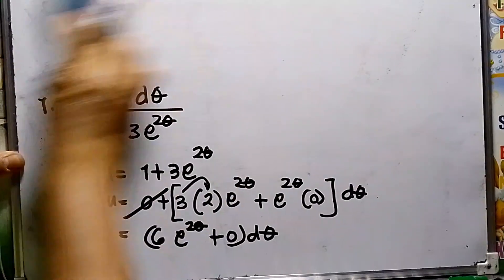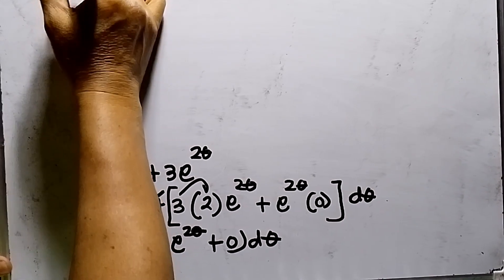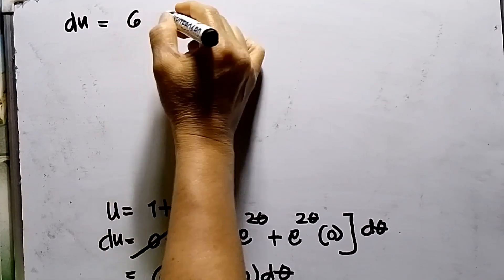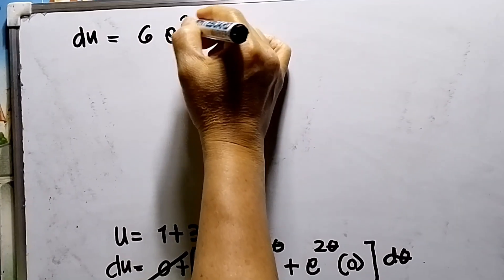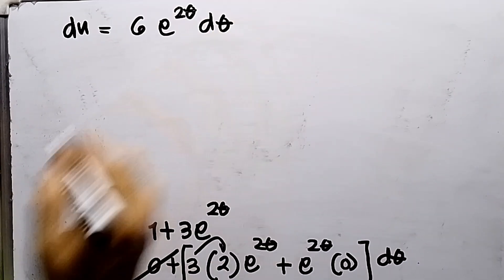So I need to erase this one. So du is equal to 6e to θ dθ.